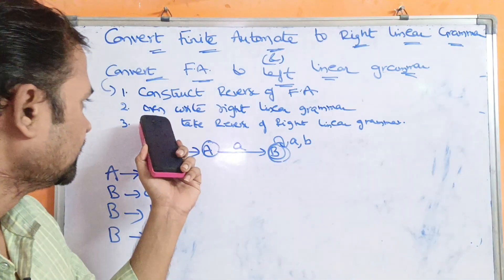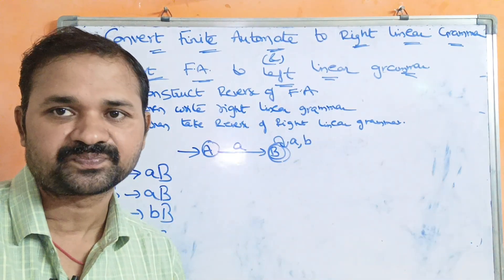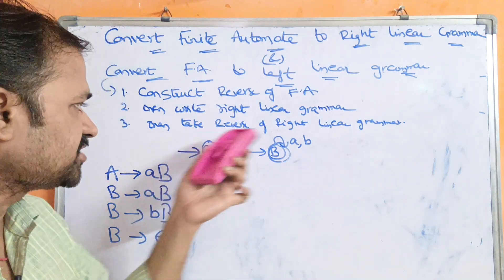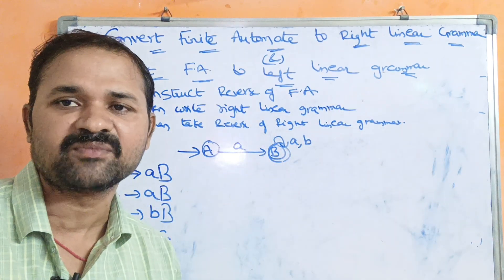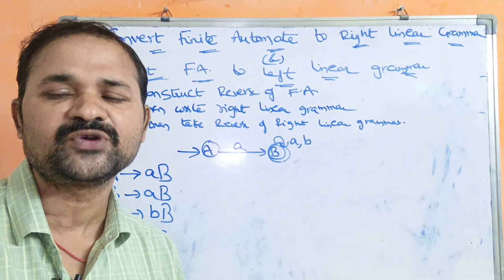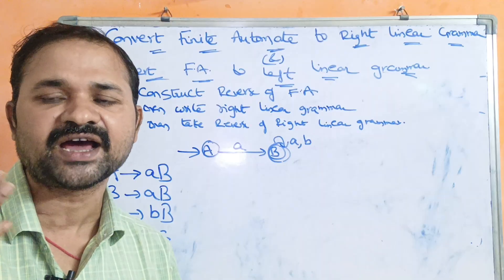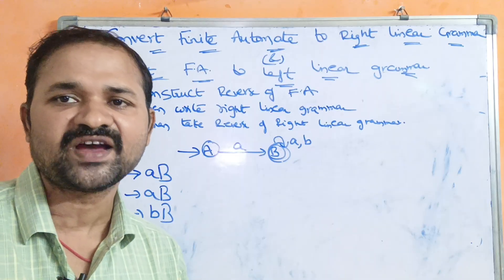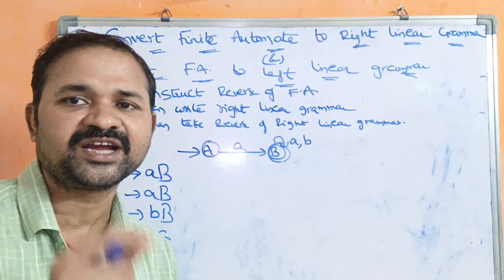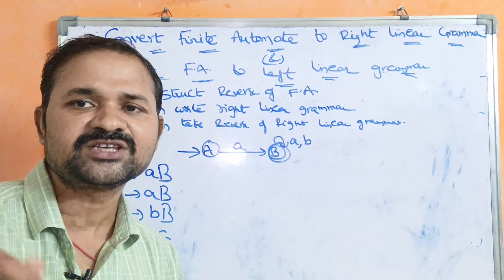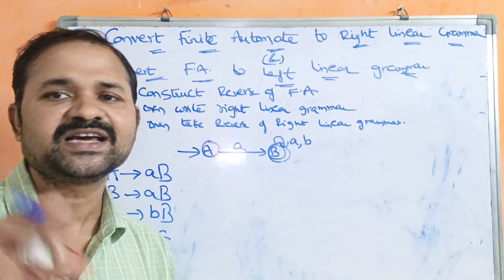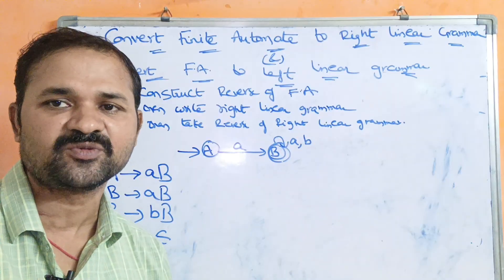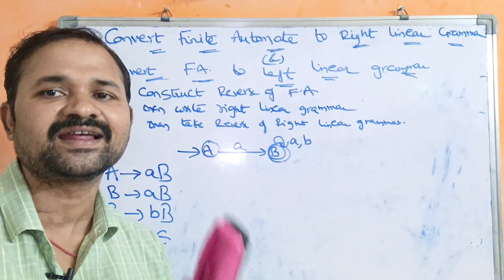The second step is to write right linear grammar based on the reversed finite automata. The third step is to take the reverse of that right linear grammar to obtain the left linear grammar. So: first, construct reverse of the finite automata — swap initial and final states, no need to change remaining states, and reverse all edge directions. Second, construct right linear grammar. Third, reverse the right linear grammar to obtain left linear grammar.